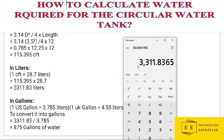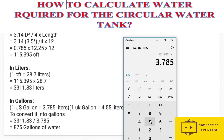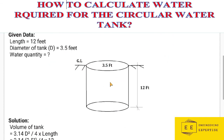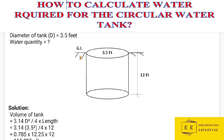We take our total liters and divide by the US gallon capacity to calculate gallons of water required. The result is approximately 875 US gallons of water required to fill the water tank, which has a diameter of 3.5 feet and a depth of 12 feet. Thanks for watching this video, please stay tuned for the next one.